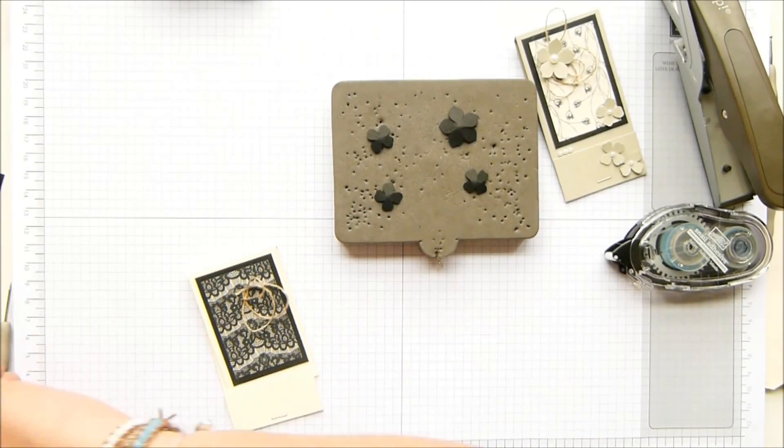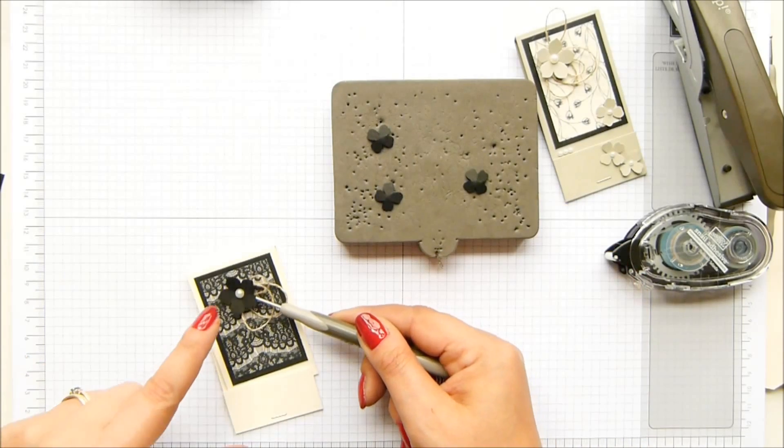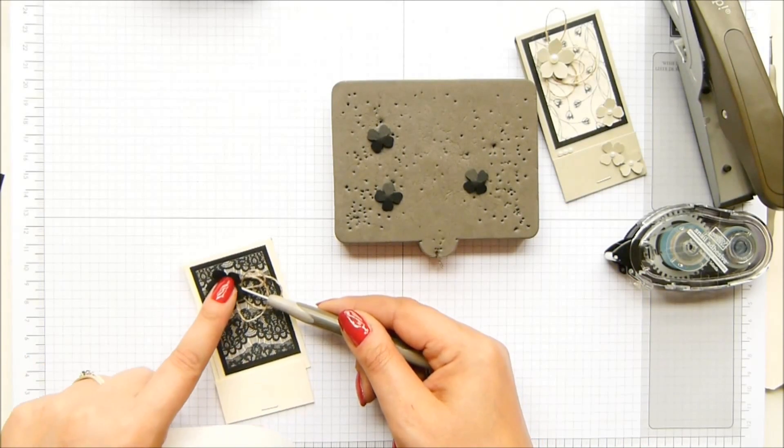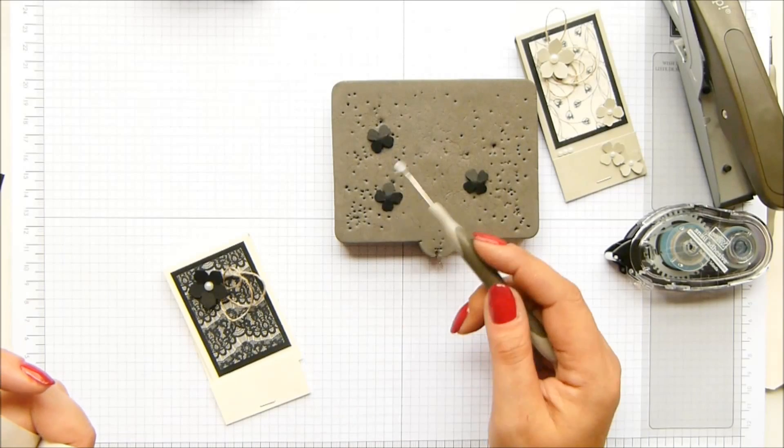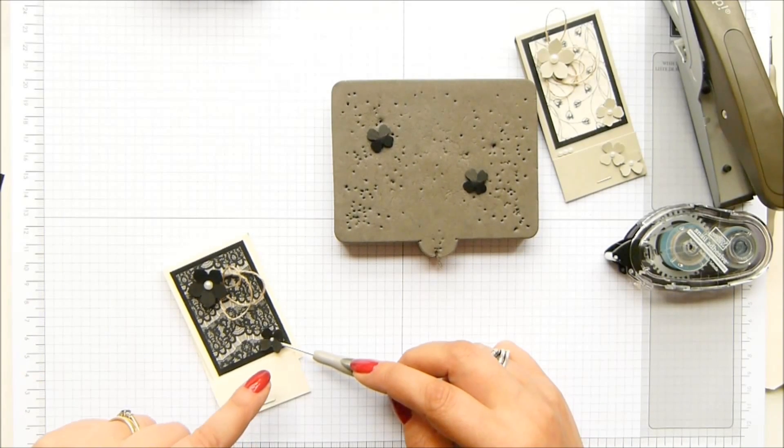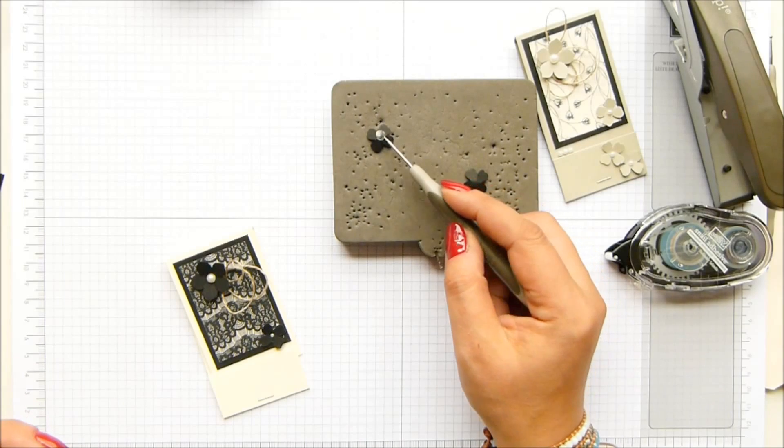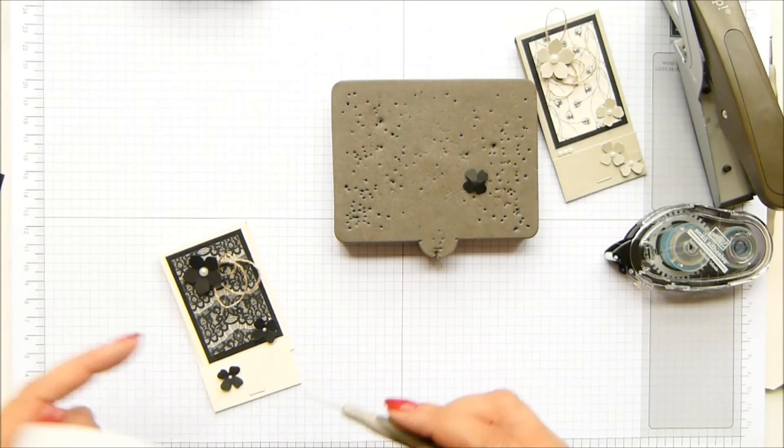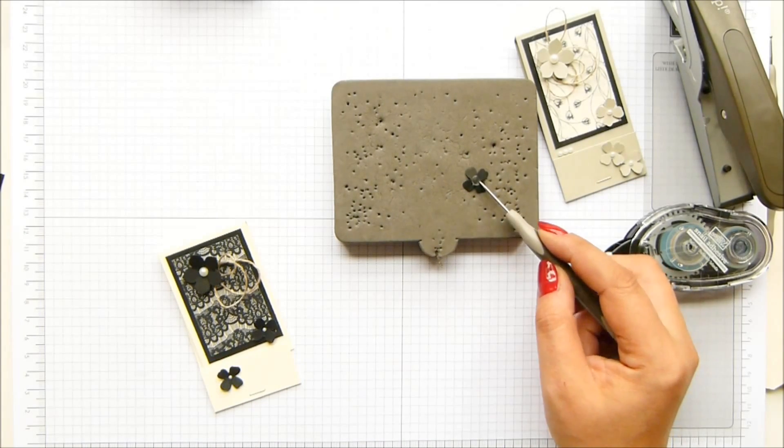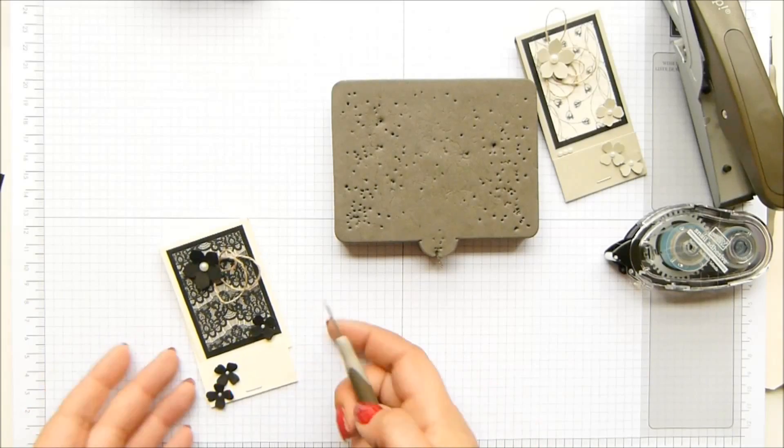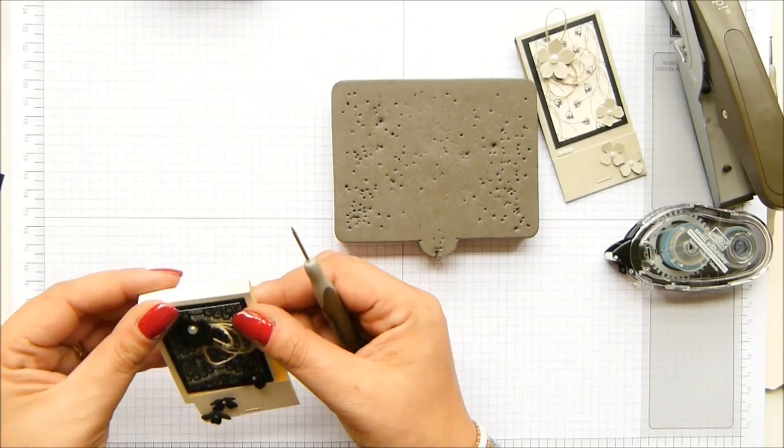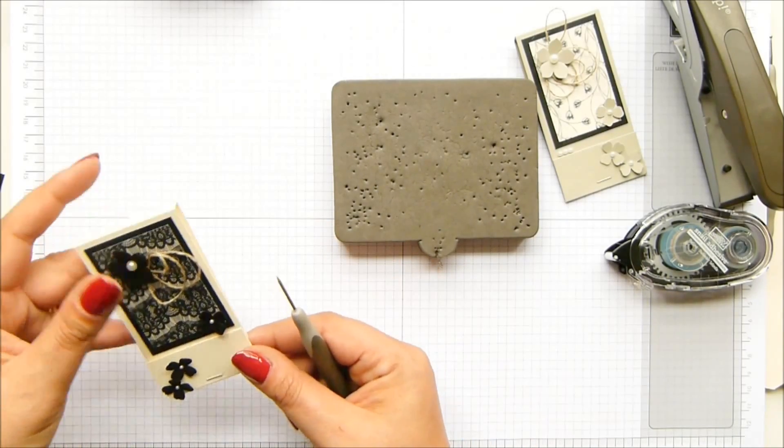And then mini glue dots for the back of these. And that's going to disguise any of the adhesive that's there. I have one there, I think. Yes, I think I'll keep it exactly the same as that one. And then, oh, actually, no. Let's just swap it slightly. A couple there. Oops. That's better.